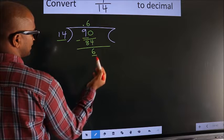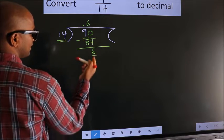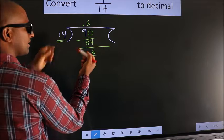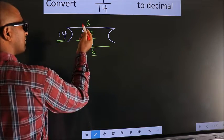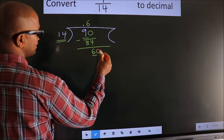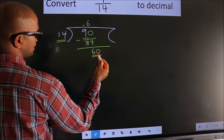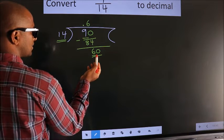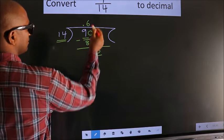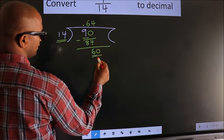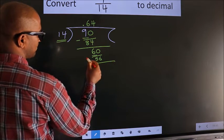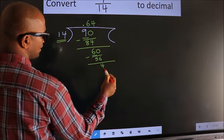Here we have 6 and here 14. 6 is smaller than 14, and we already have the decimal, so we can directly take 0. So we have 60. A number close to 60 in the 14 table is 14 × 4 = 56. Now we subtract. We get 4.